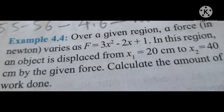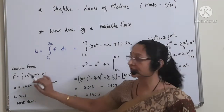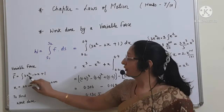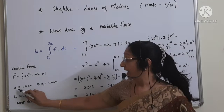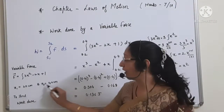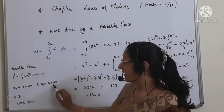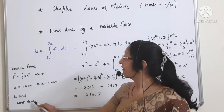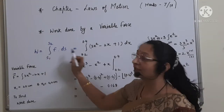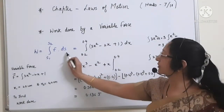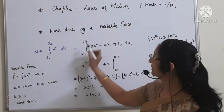Over a given region, a force in Newton varies as F = 3x² − 2x + 1. In this region, an object is displaced from x1 = 20 cm to x2 = 40 cm by the given force. We need to calculate the amount of work done. Given in the problem is a variable force, so we use the integral of (3x² − 2x + 1), where x1 is 20 cm (0.2 m) and x2 is 40 cm (0.4 m). We use the formula: W = integral from s1 to s2 of F · ds.